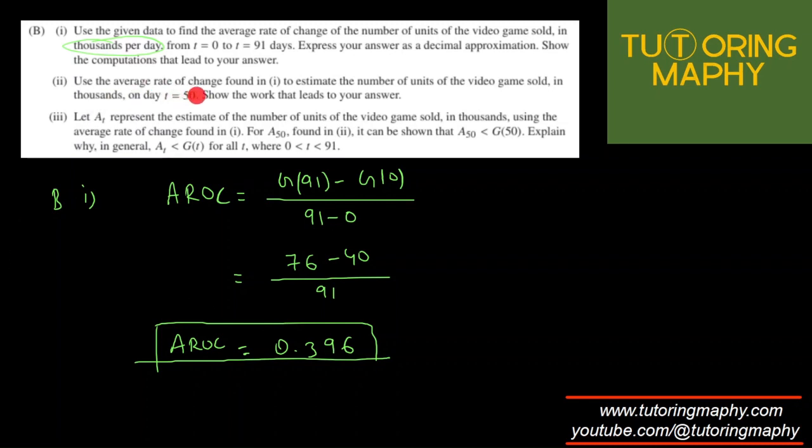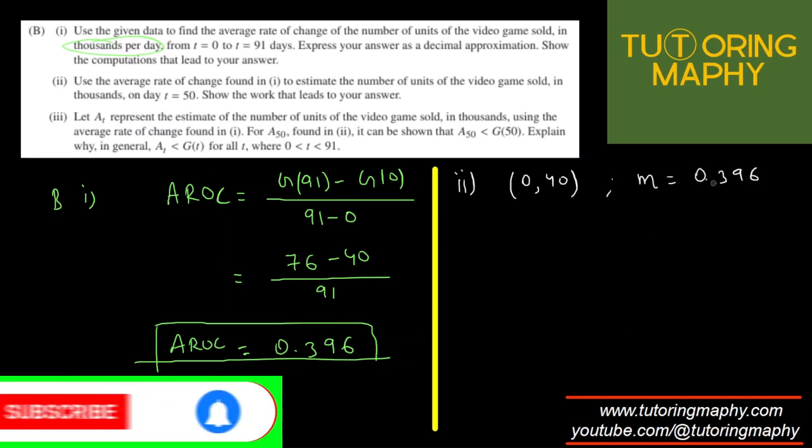Question number two says that use the AROC to find the number of video games sold in thousands at T equals 50. So this is just about using this as a slope, writing the equation of a straight line and then finding the value at T equal to 50, the slope intercept form kind of thing. So I'm going to say that I know that there is a point on the line, which is 0, 40. It's given in the question, right? At T equal to 0, video games were 40. And the slope given to us, or not given to us, we just found, is 0.396. Because the average rate of change is nothing but the average slope, which we are considering to make a straight line.